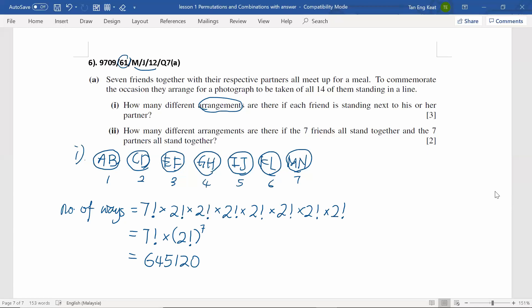Now, let's have a look at part two. How many different arrangements are there if the seven friends all stand together and the seven partners all stand together?